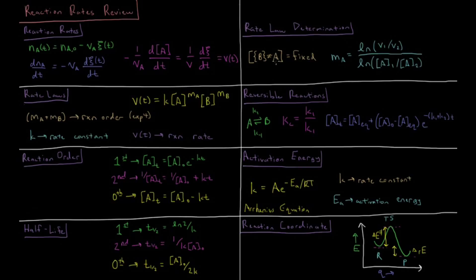You can determine the rate law by setting up an experiment where you measure the reaction rate as a function of a given concentration while all other concentrations are held constant. This can be done by various methods: initial rates, method of isolation, or relaxation methods. The order in A is then the natural log of the ratio of the reaction rates at two different concentrations of A, divided by the natural log of those concentration ratios.